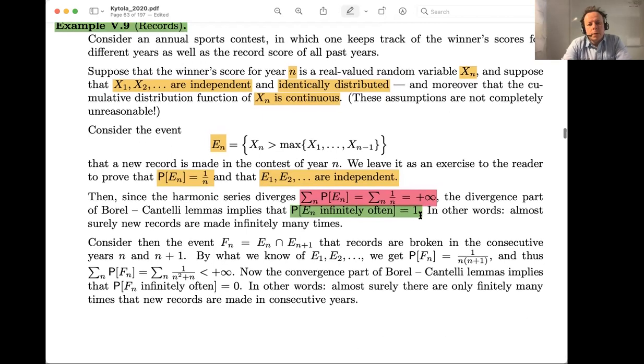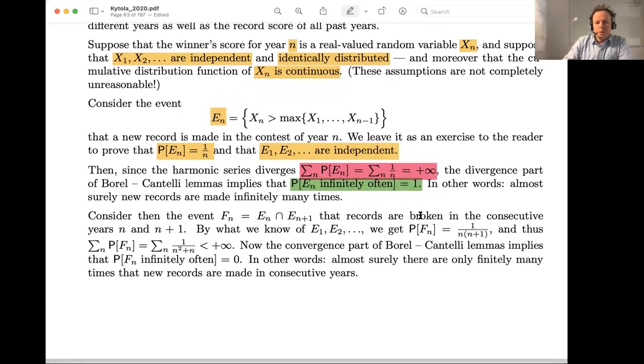Final thing is about consecutive records. So we could also study the probability that we make two records in a row. So let's say F is the event that there's a record on year n and the second year also. So we could look at how often we would see events that there are two years in a row that in both years a record happens.